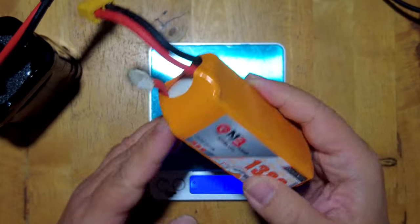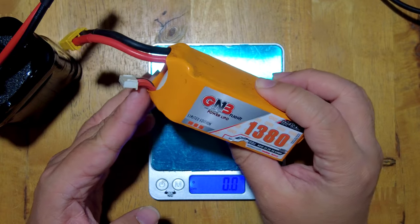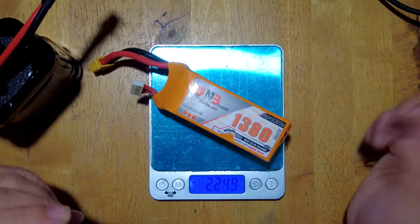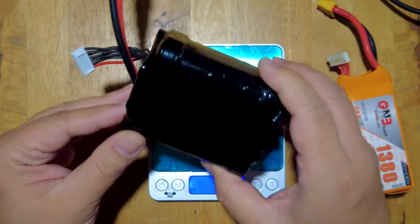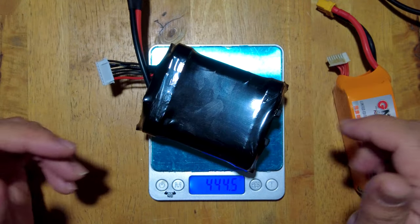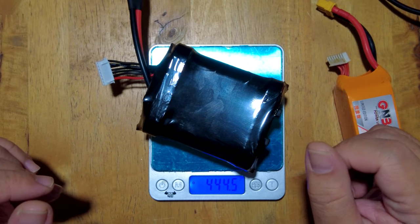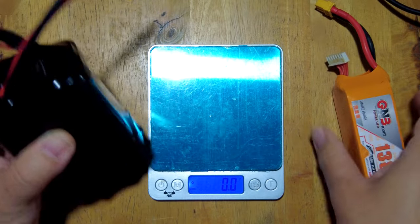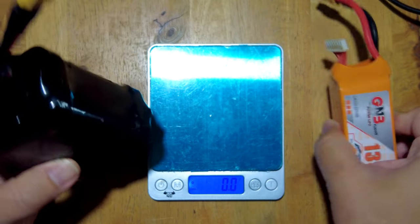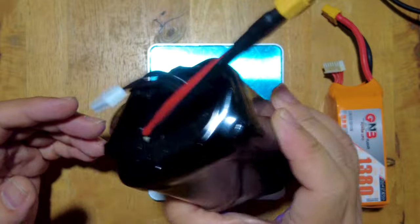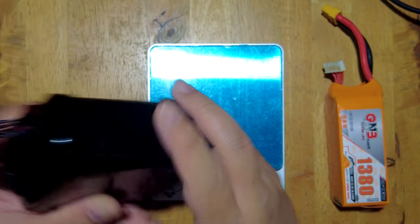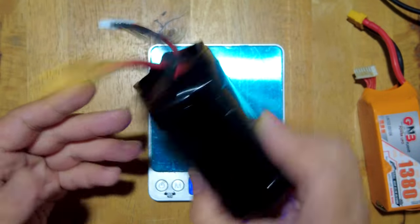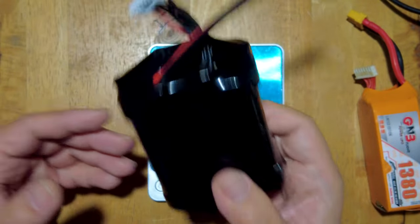Just to set our baseline, this is a GNB 1,380 milliamp hour LiPo. This is also a 6S and comes around 225 grams. And this one is a 4,000 milliamp hour pack coming in at around 450 grams. This thing is twice the weight of your regular 6S LiPo, but it has thrice the energy density with 4,000 milliamp hours of capacity.